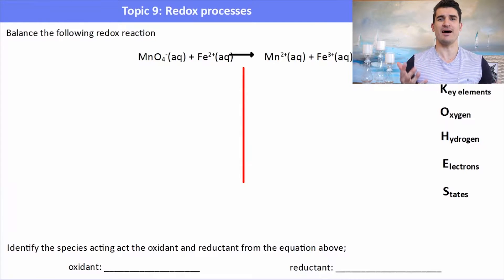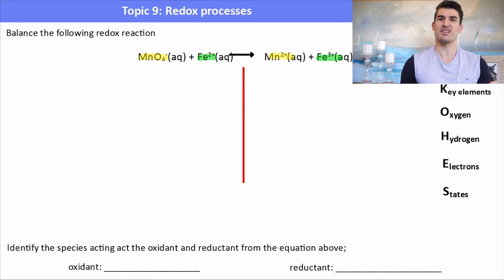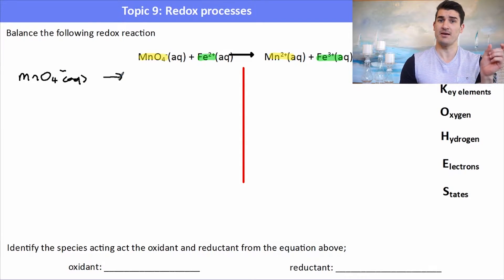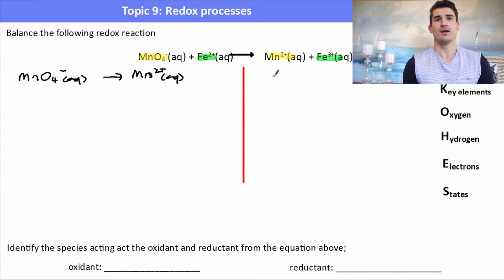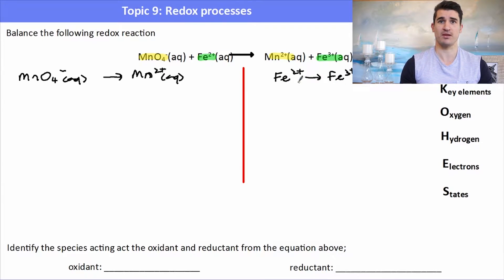Here's an example. We have an unbalanced redox equation: the permanganate ion plus Fe2+ turning into Mn2+ and Fe3+. To start, we need to identify the two half equations. The permanganate ion must form Mn2+ — that's the manganese half equation. The other half equation must involve the iron: Fe2+ turning into Fe3+.